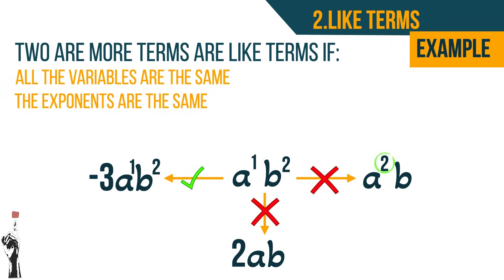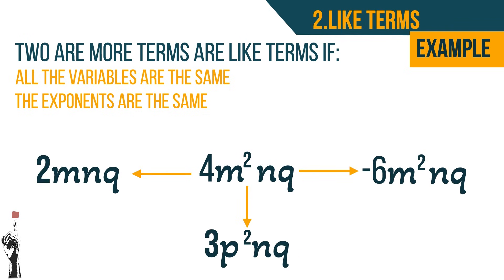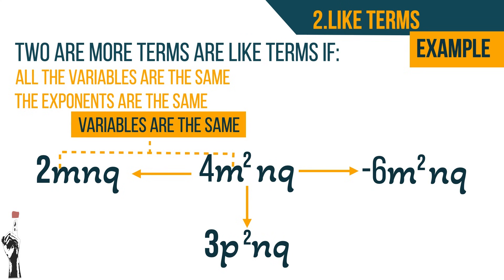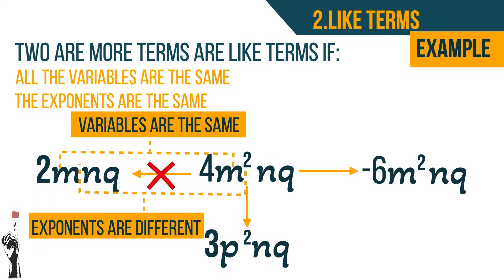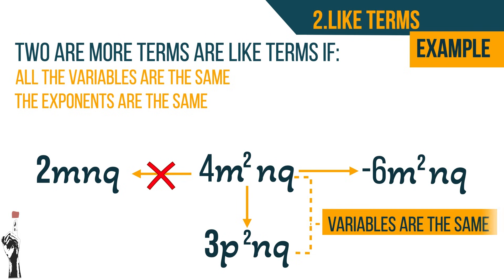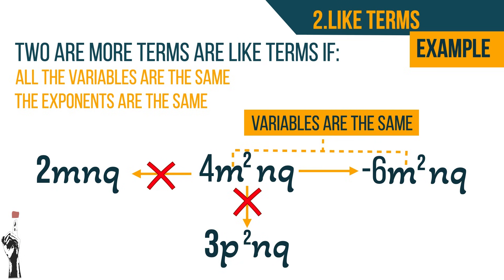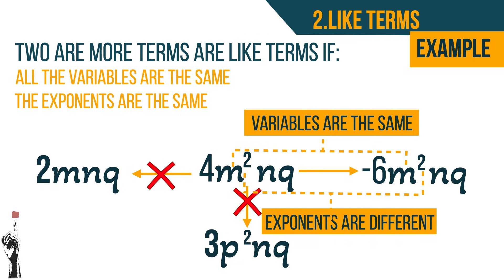A more complex example: 4m squared n cubed. Compared to 2mn cubed — variables are the same but the exponent on m differs, so not like terms. Compared to 3p squared n cubed — the variables are not the same, so not like terms. Compared to negative 6m squared n cubed — both m's have the same exponent and both n's have the same exponent, so 4m squared n cubed and negative 6m squared n cubed are like terms.